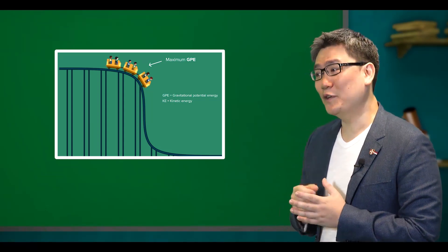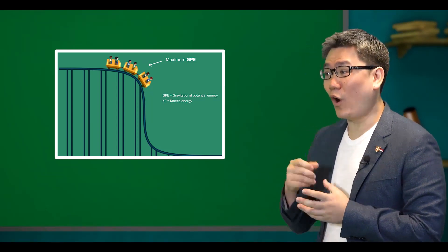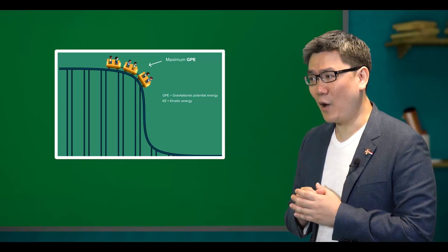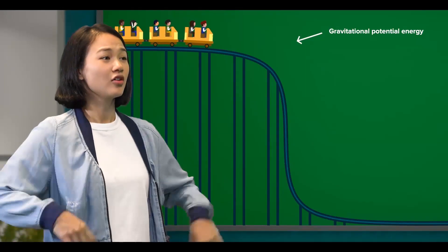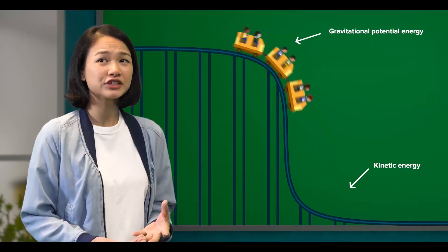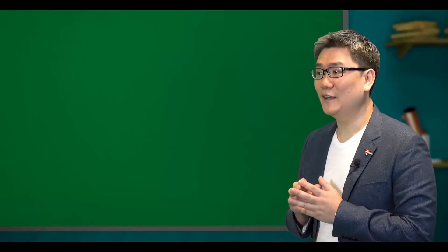That aside, for the roller coaster that you rode on in Six Flags, how is the energy converted? Well, that's pretty simple. Gravitational potential energy is converted into kinetic energy. Good.